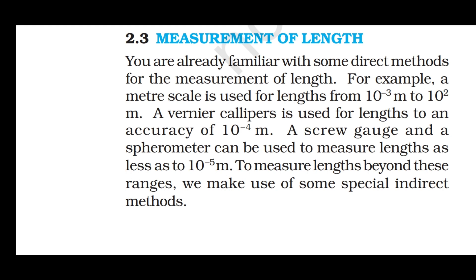Measurement of Length: You are already familiar with some direct methods of measurement of length. For example, a meter scale is used for lengths from 10⁻³ m to 10⁻² m; a vernier caliper is used for length to an accuracy of 10⁻⁴ m; a screw gauge and a spherometer can be used to measure lengths as small as 10⁻⁵ m. To measure lengths beyond these ranges, we can make use of some special indirect methods.